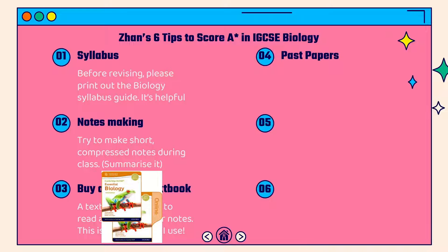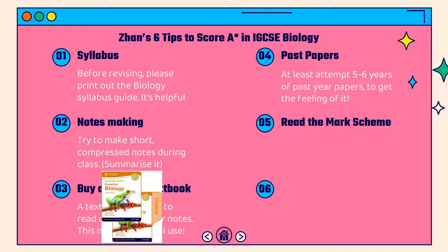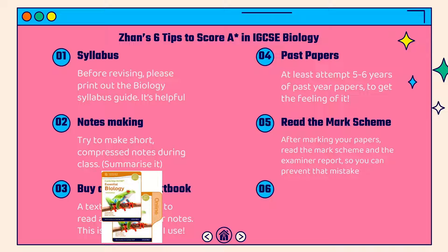Number four is past papers. Honestly, even if you haven't studied much, past papers can already tell you how well you're doing. They show you what kinds of questions may come up. Please attempt at least 5 to 6 years of past papers across all series and all variants — do not skip any variants. Read the mark scheme carefully; sometimes the textbook gives a few points but the mark scheme gives more than six. After marking your papers, also read the examiner report so you can prevent mistakes and gather more ideas.